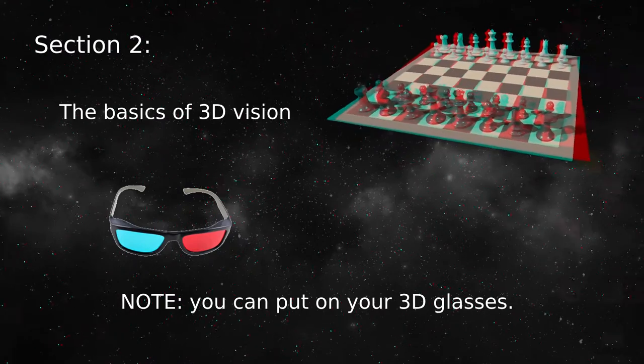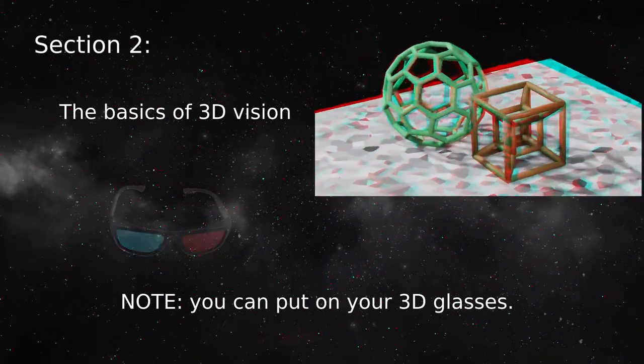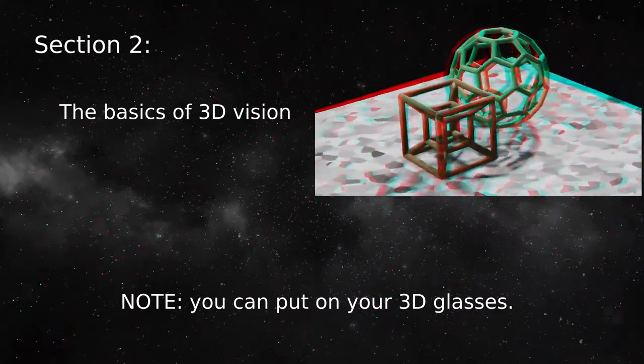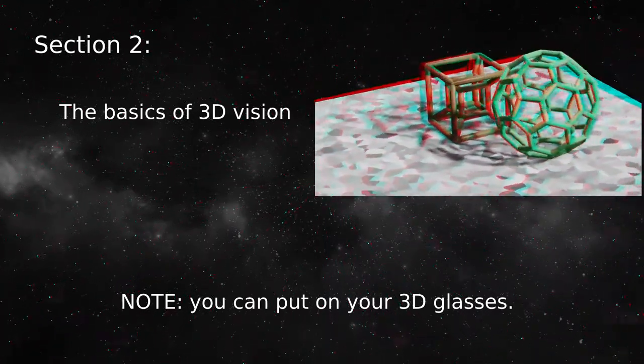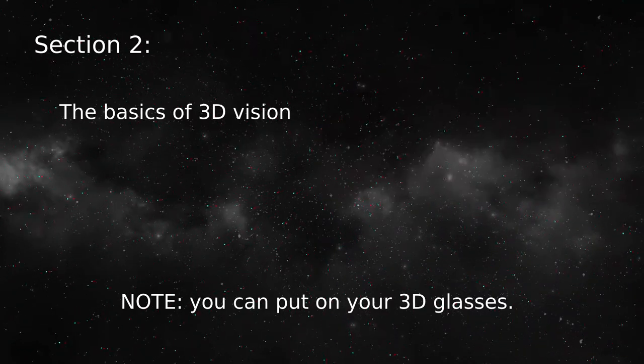For properly designed glasses, none of the red color passes through the cyan lens and none of the cyan color passes through the red lens, so the glasses provide our eyes with the correct images for a 3D effect.